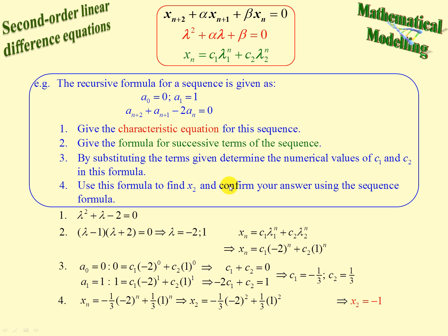We haven't finished yet because it says confirm your answer using the sequence formula. So we're now going to use the sequence formula. We know a sub 0 is 0, a sub 1 is 1, and then we use those by substitution into here to find the value of a sub n plus 2. And we get x sub 2 equaling negative 1, confirming our answer from the first part. So either way we'll get the same answer.